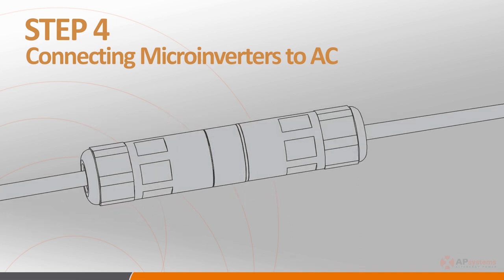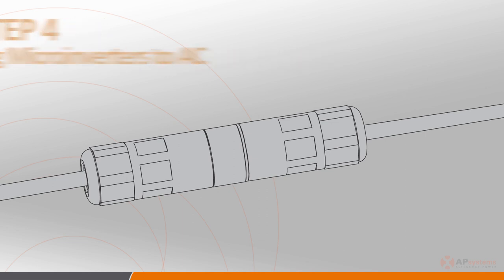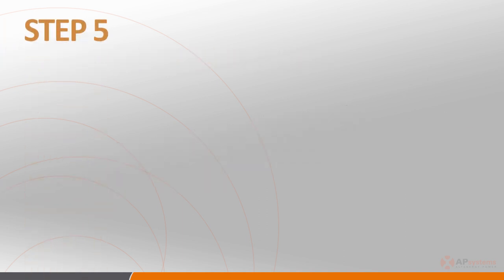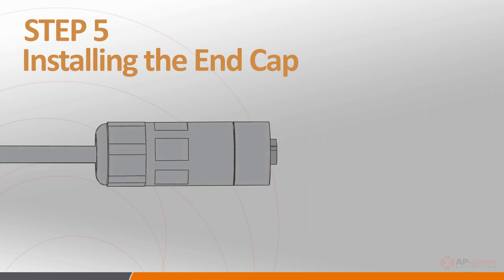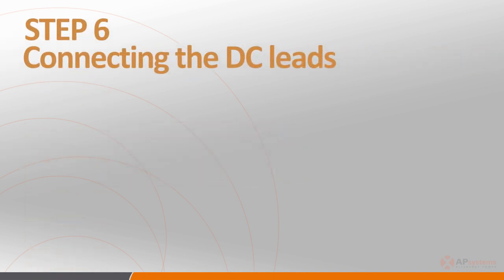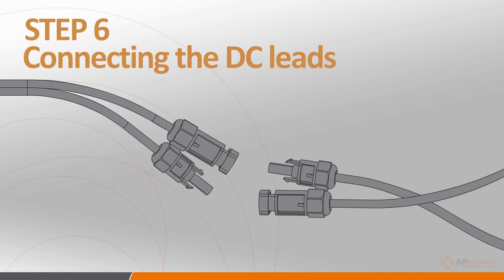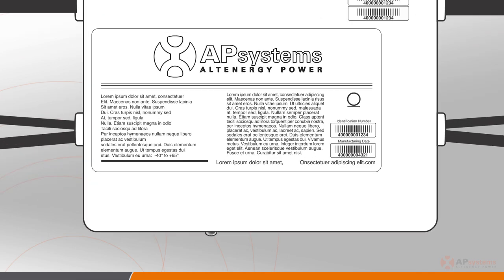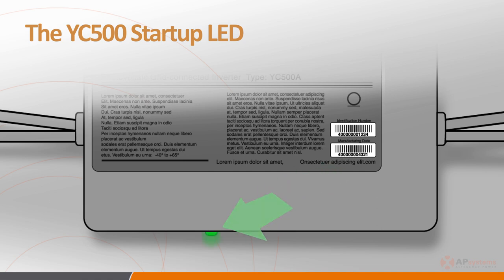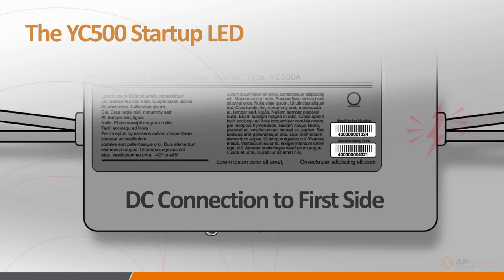Also, a word of caution when making these connections: do not string the AC cabling so tight that it is placing a stress on the connection points. Once the AC connections have been made, you're ready to move on to step 5 — installing the protective end cap onto the open AC connector on the last inverter in each branch circuit. Step 6: place the PV modules on the racking system and connect the DC leads from each of the PV panels to the microinverters, making sure that the connectors are securely snapped into place. The LED on the microinverter will flash green three times when DC power is first applied, indicating a successful connection.